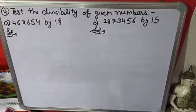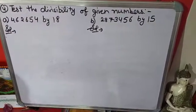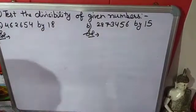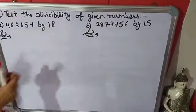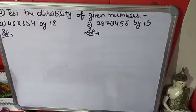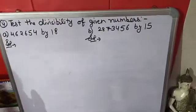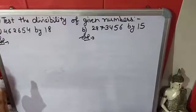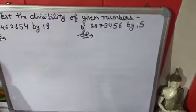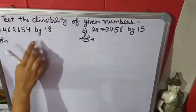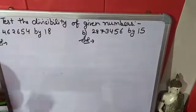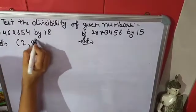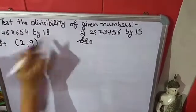4th question: test the divisibility of the given numbers — this number by 18 and this number by 15. The rule of 18: if a number is divisible by both 2 and 9, then it is completely divisible by 18, because 2 times 9 equals 18.